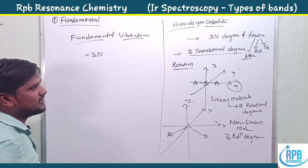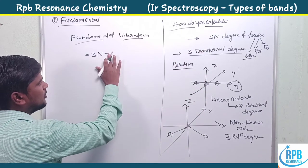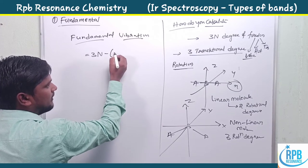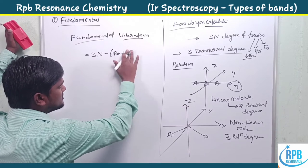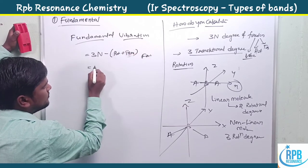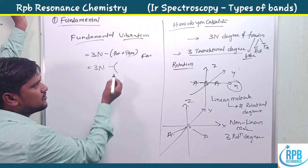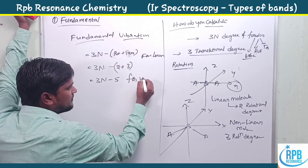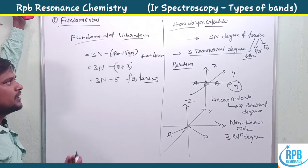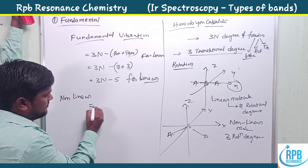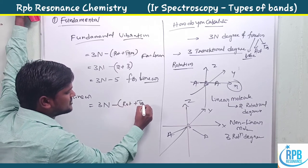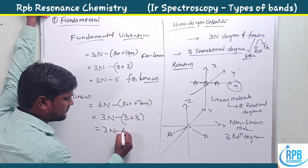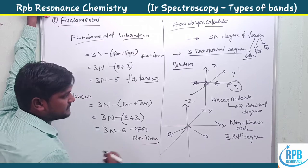These two formulas are very helpful for predicting fundamental vibrations. For linear molecules: 3N − 5. For non-linear molecules: 3N − 6. Here N = total number of atoms in the molecule. Let us calculate some examples. Water (H2O), ammonia (NH3), CO2, and benzene (C6H6) are our example molecules.